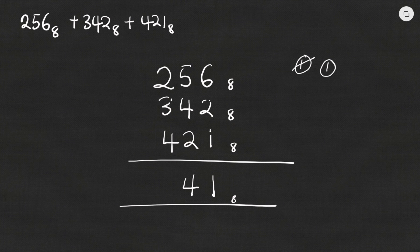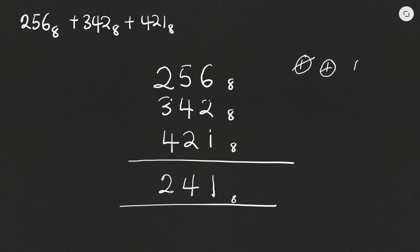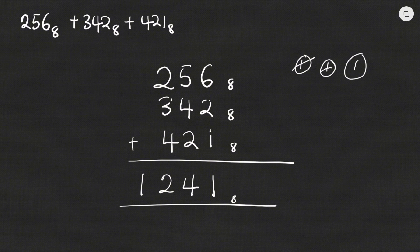Moving on: two plus three is five, plus four is nine, plus the one we already carried makes ten. How many times would eight go into ten? It goes there once, left with two. So I write down two as the remainder, and since I don't have any number in front to add, I bring the one I carried to the front. So I get 1241 base eight as my answer.